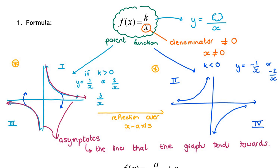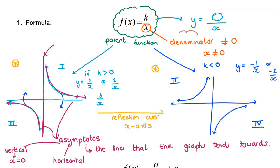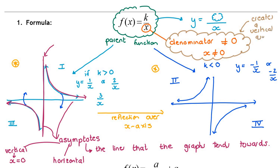Why does the vertical asymptote occur? There are two types of asymptotes: the vertical asymptote and the horizontal asymptote. The vertical asymptote in this hyperbola is x equals zero — it's a line the graph cannot touch. It cannot touch the y-axis because the denominator can't be zero. This concept creates a vertical asymptote because there is a value that x cannot be.